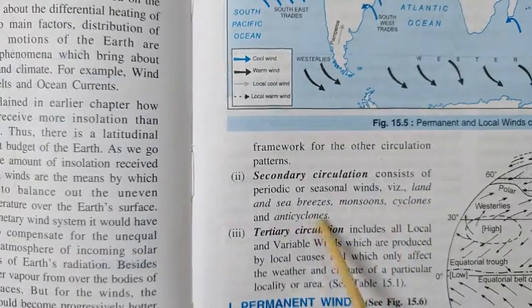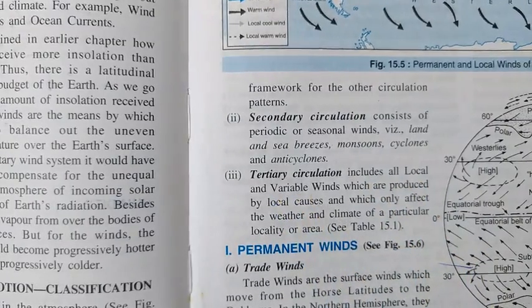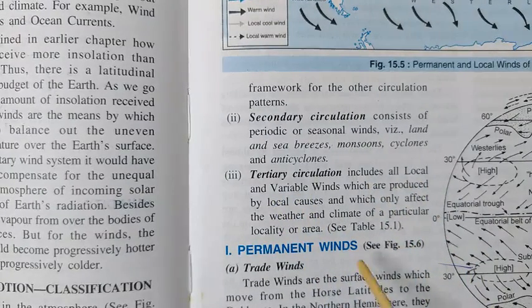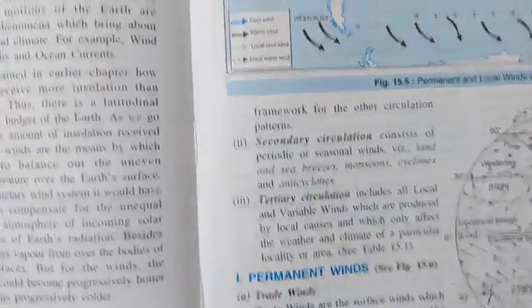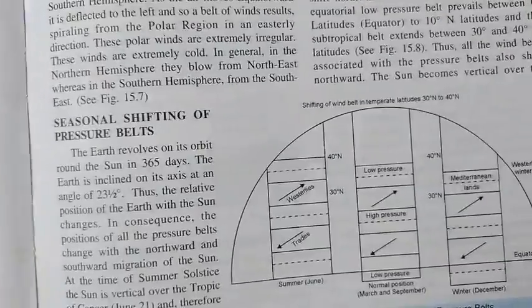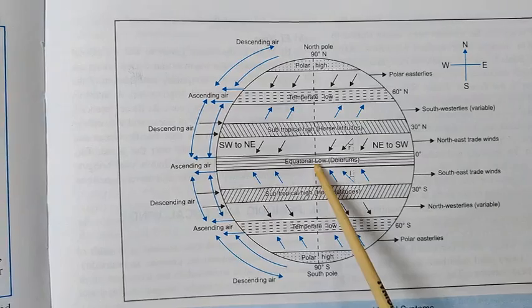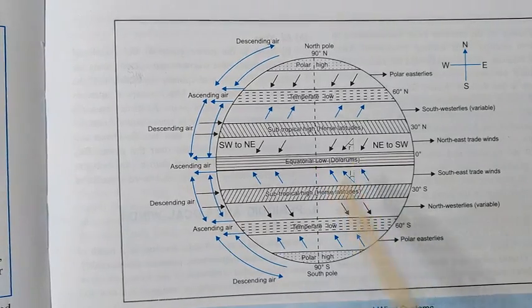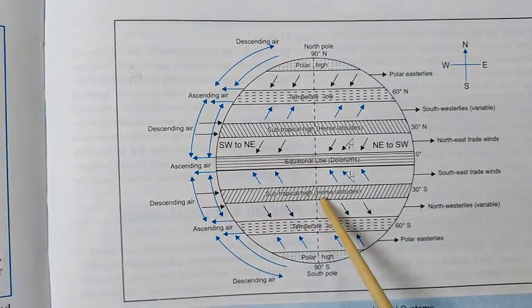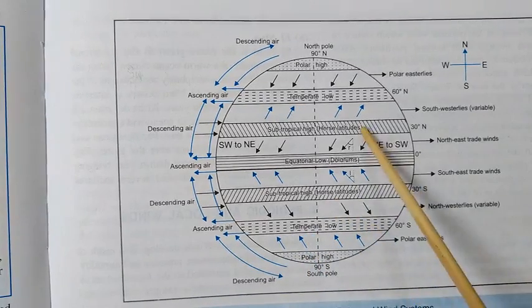For this I need to show you the diagrams, and today because I need to show so many diagrams, from now onwards I will teach you directly from the book. The primary circulation includes permanent winds: trade winds, westerlies, and polar westerlies.